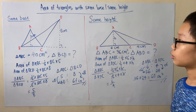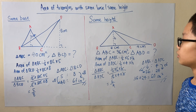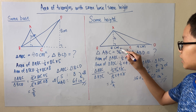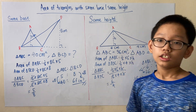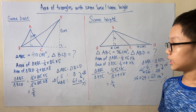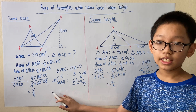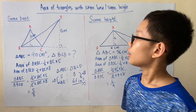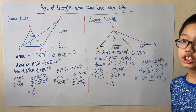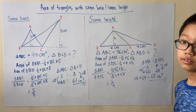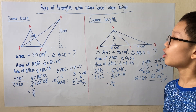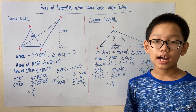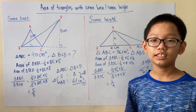We can also conclude that for triangles with the same height, the ratio of their areas is the same as the ratio of their bases. As a conclusion for this episode: for triangles with the same base, the ratio of their areas is the ratio of their heights; for triangles with the same height, the ratio of their areas is the ratio of their bases. I hope this video helped you understand more about triangles with same base or same height. Until next time, I hope you have fun in math. This is JT, signing out.